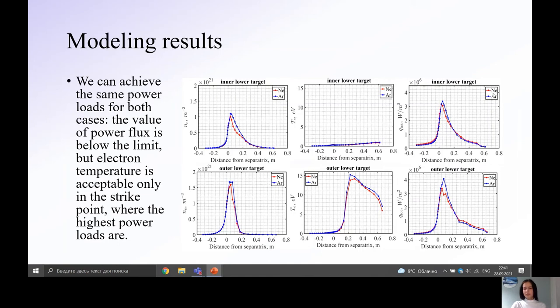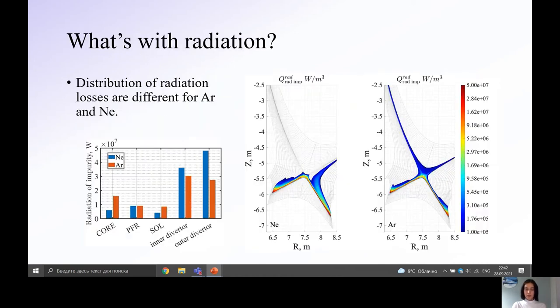Let's look at mid-plane profiles. Electron density and electron temperature are quite similar for both cases. Effective charge inside separatrix is higher for neon than for argon. Electron density at the separatrix is similar, about 57% of Greenwald limit. Let's look at power loss on divertor targets. They are quite similar for both targets and both impurities, but electron temperature is different. In the inner target, electron temperature is below the limit, which is really great. But in the outer target, electron temperature is lower than 5 electron volts only in the strike point. In the far scrape-off layer, this temperature is about 15 electron volts, which is not so good.